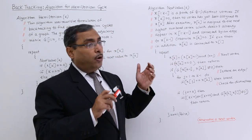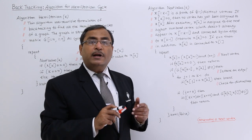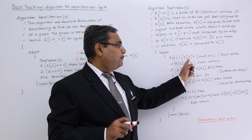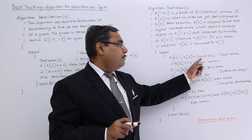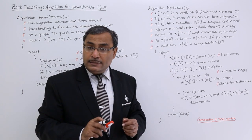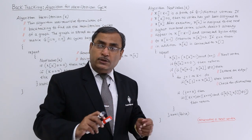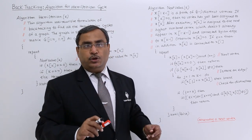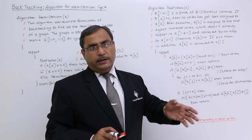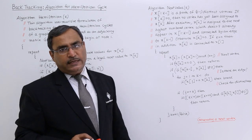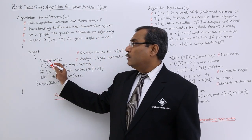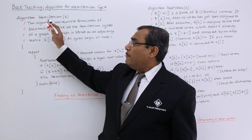If x[k] equals 0, we return from next value k and go back to the caller, which is the Hamiltonian function. If x[k] is not equal to 0, that means some value has been suggested, and we must check whether there is an edge between the node at position x[k−1] and the node at x[k] in the adjacency matrix. If the matrix entry is non-zero, an edge exists.